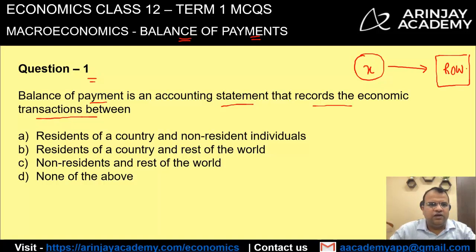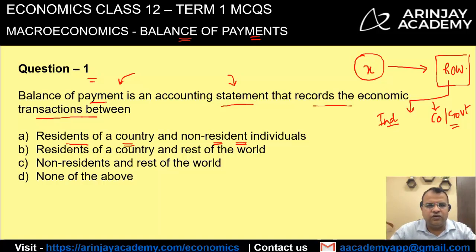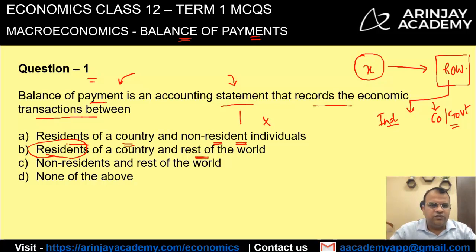The transaction is between the residents of a country and the rest of the world. The rest of the world may comprise of individuals, companies, government, firms, and many other people. The answer is not 'non-resident individual' because it covers transactions with the rest of the world broadly — even transactions with non-individuals are covered.